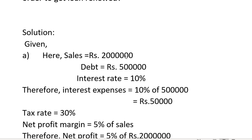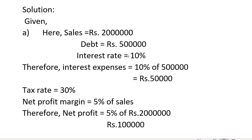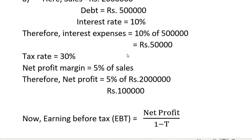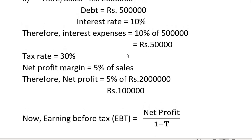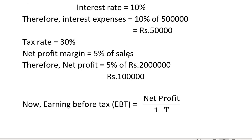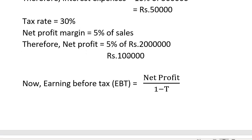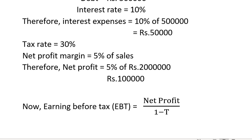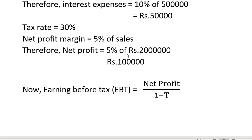Given: annual sales are $2 million, debt is $50,000, interest rate is 10% of debt. Tax rate is 30%, and net profit margin is 5% of sales. Therefore, net profit is 5% of 2,000,000.